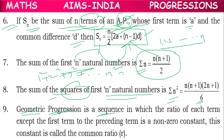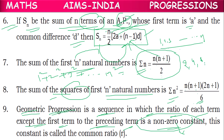Geometric progression is a sequence in which the ratio of each term (except the first) to its preceding term is a non-zero constant. For example, 4/2 = 2, 8/4 = 2, 16/8 = 2 — if the ratio is the same and is a non-zero constant, it is called the common ratio, the sequence is a GP, and the common ratio is denoted by r.